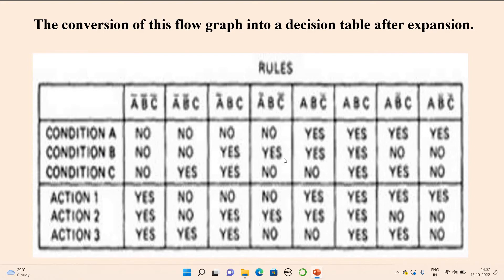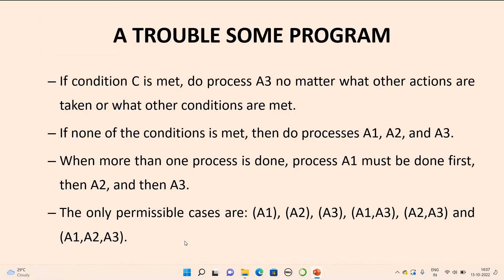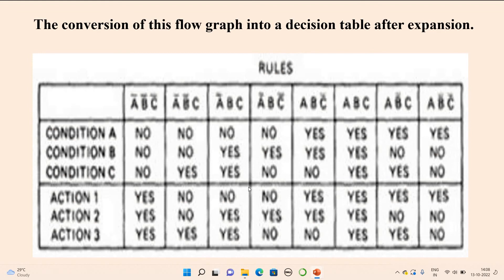Continuing the table: when B-bar is there it is no; when B is there it is yes. When C-bar is there it is no; when C is there it is yes. Based on these conditions the actions are generated. Whenever no condition is met, all actions will be implemented. Whenever condition C is met, do action A3. The order of actions must be A1 first, then A2, then A3. We have to remember these rules in constructing this table, which simply describes those rules.